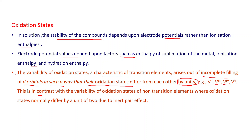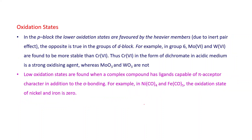This is in contrast with the variability of oxidation states of non-transition elements, especially when we compare the oxidation states of p-block elements, where oxidation states normally differ by a unit of 2. Going down the group in p-block elements, the lower oxidation state is more stable, and the reason is the inert pair effect.